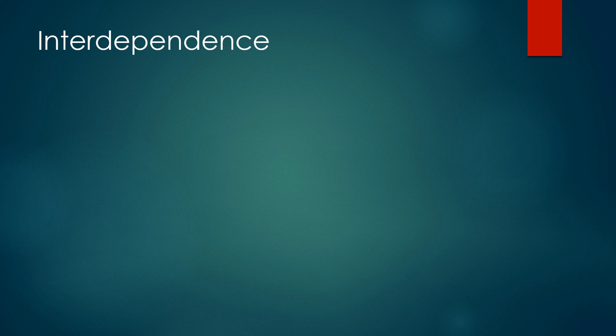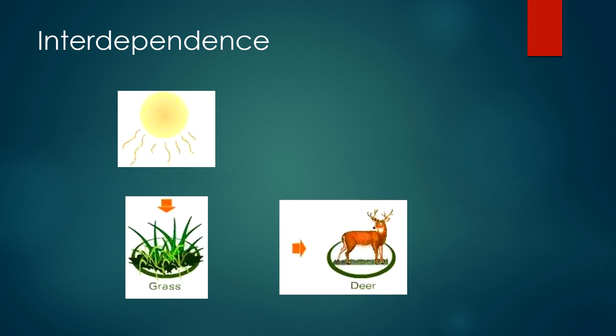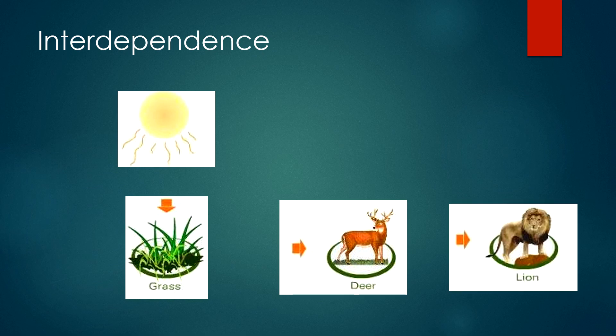A very simple example of this is the following. Without the sun shining, the grass would die. Without the grass, the deer would not survive. And without consuming the deer, the lion would not survive as well. This shows a very simplified example of how we depend on each other for our survival.